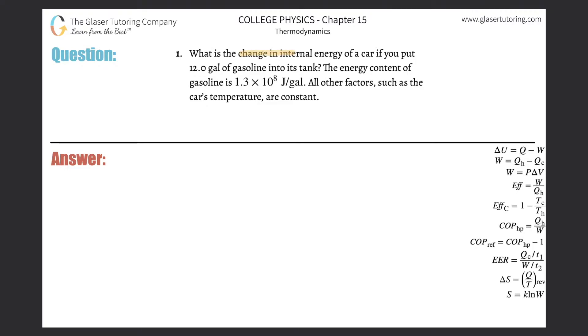Number one, what is the change in internal energy of a car if you put 12 gallons of gasoline into its tank? The energy content of gasoline is 1.3 times 10 to the 8 joule per gallon. All other factors such as the car's temperature constant.